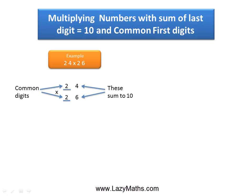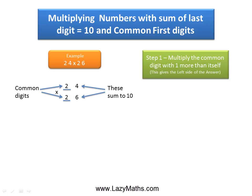So we can apply this shortcut. The first step is to multiply the common digit with 1 more than itself. One more than the common digit 2 is 3, so 2 has to be multiplied with 3. Two times 3 gives us 6, which is the left-hand side of the answer.